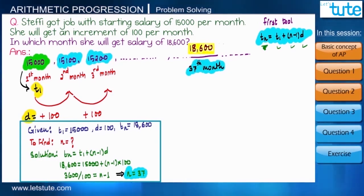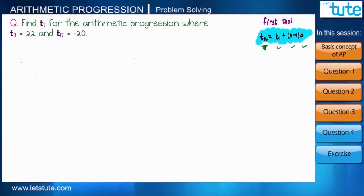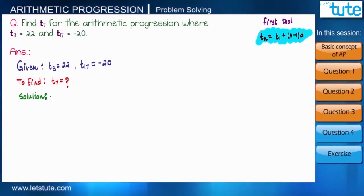So now we have understood what is n and tn in any given situations. Let us move to the next situation. Here it says third term of an arithmetic progression is 22, that is t3 equals 22, and 17th term is minus 20, and we have to find seventh term, that means t7. We know that any term of the sequence can be written in the form of first term and the common difference. So even t7 can be written as t1 plus 6d. That means if we have to find the value of t7, then we should know t1 and d, and we have to find t1 and d by given two values, that is t3 and t17.